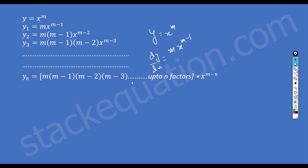So similarly, for the nth derivative, it will start from m·(m-1)·(m-2)·(m-3) and so on, up to n factors, into x to the power m minus n. How did we come up with this? Please observe the pattern.